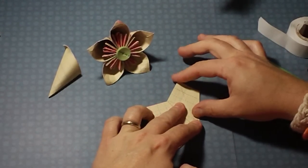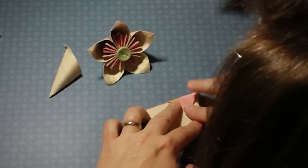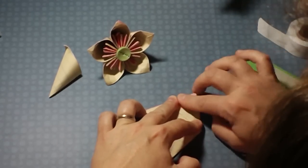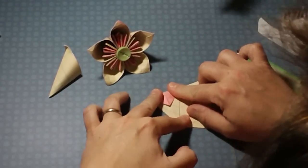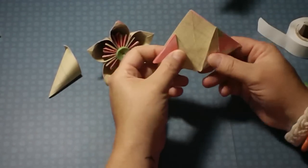Now we take our point here and fold it down so that it's flush with that edge over there. And the same here, fold this one down so it's flush with the edge. Now we have this.